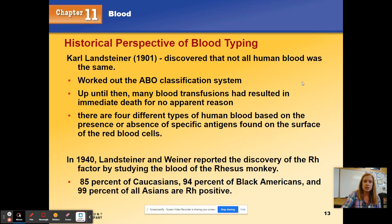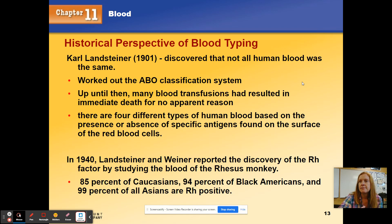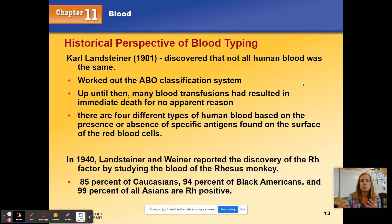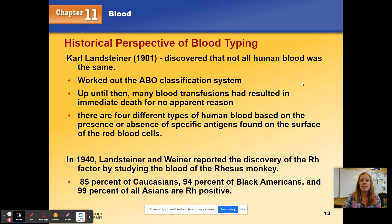Just to start off with a little bit of history — people didn't always know that there were different types of blood. People just thought blood was blood, and if you needed a transfusion it was assumed that anybody could give you blood. Sometimes that would work out and the person would get better, and sometimes for no apparent reason that person would die and they couldn't figure out why. Karl Landsteiner in the early 1900s was the first one to discover that not all human blood is the same, and therefore it does matter what kind of blood you're receiving.